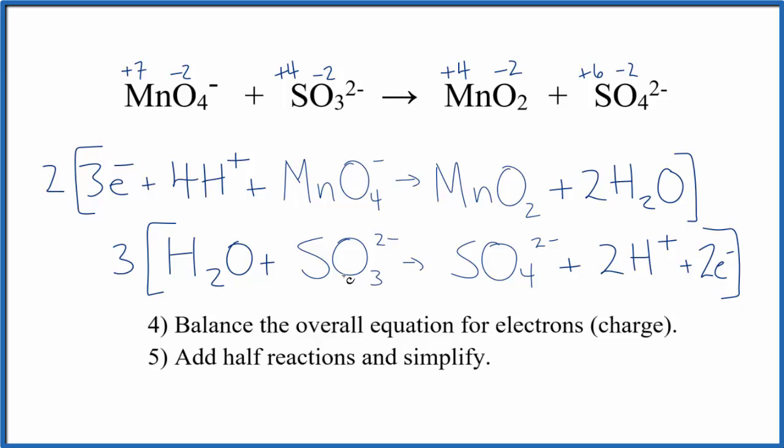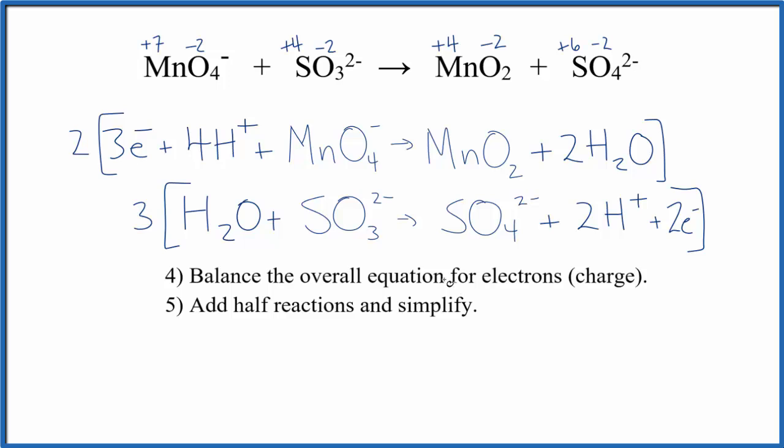So we need to simplify. We need to add the half reactions together now and simplify. So what we'll do is we'll take two times all of this and three times all of this. That's the reactants. The products two times here and three times right here. Those are the products. That'll be our redox reaction. Then we can simplify. That looks like this.